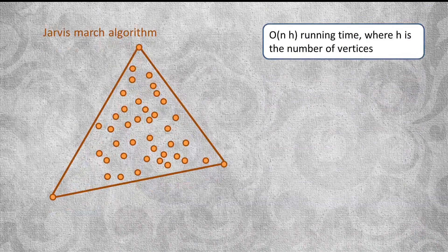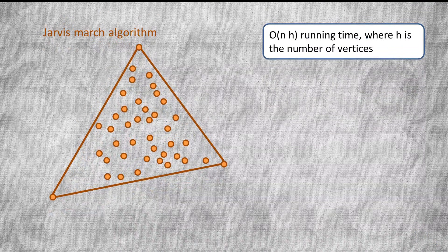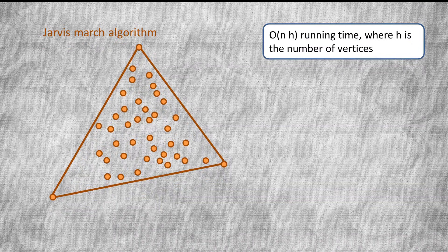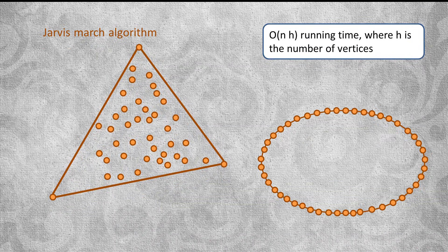More formally, the running time of Jarvis March is order n multiplied by h, where h is the number of vertices. Of course, if the number of vertices is large, such as when you have all of the points along the perimeter, then the running time turns for the ugly of order n squared.